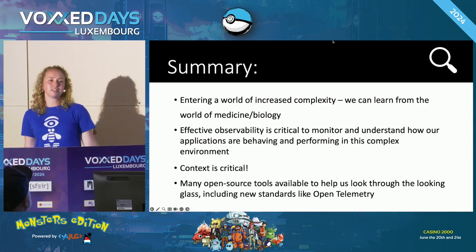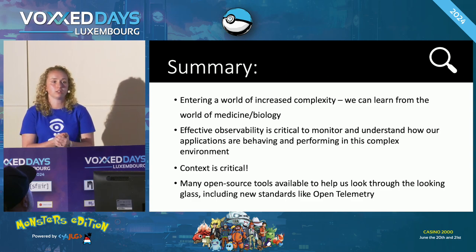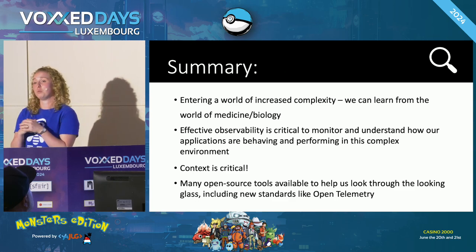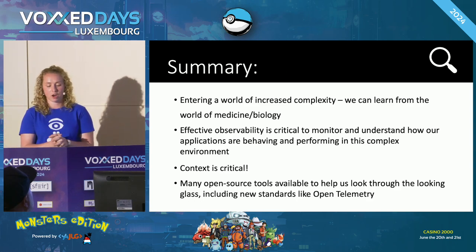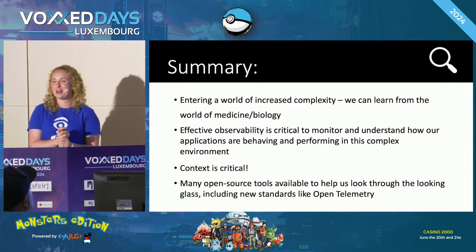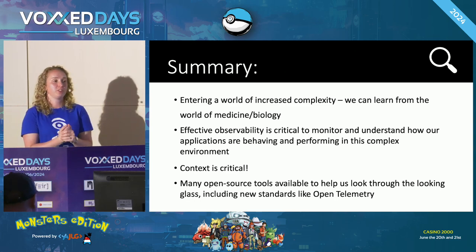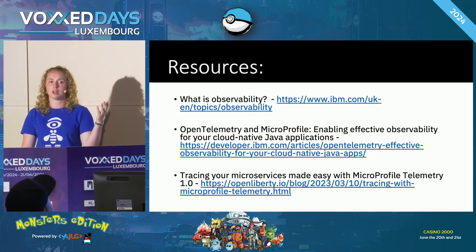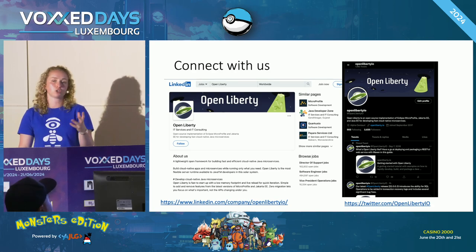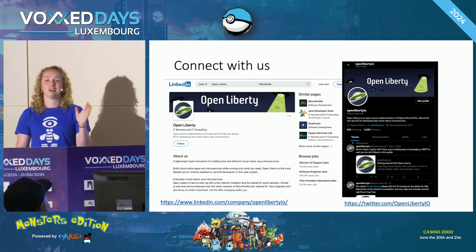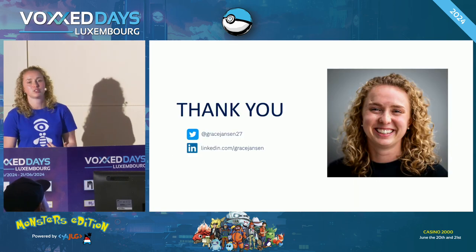So hopefully, in that whirlwind of a talk, what I showed you is that we're entering a more complex world as we create applications made of hundreds — if not thousands — of microservices deployed into the cloud. But it is through effective observability that we are able to understand and monitor our applications, and context is critical — not just with logs and metrics. The nice thing is you're not alone: there are lots of open source tools and technologies to help you, and hopefully things like OpenTelemetry or MicroProfile might be able to help with that. I'll share my slides afterwards, and you can connect with us on Twitter, X, or LinkedIn. Thank you so much.